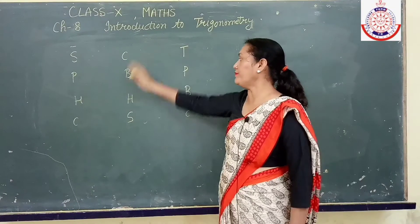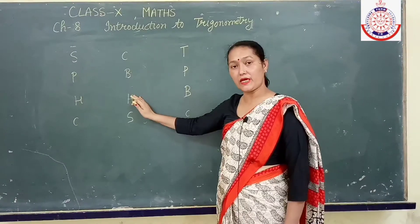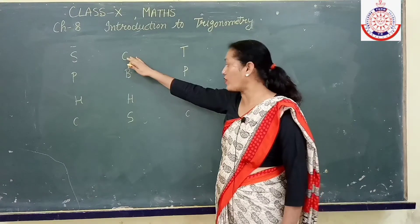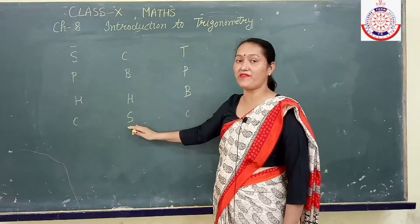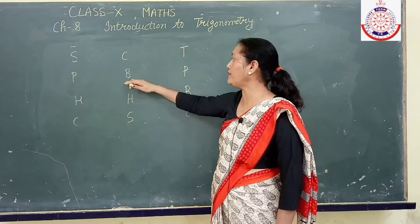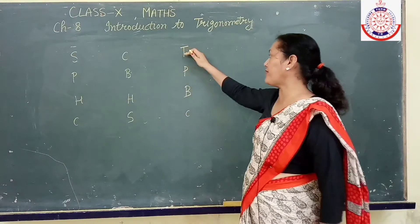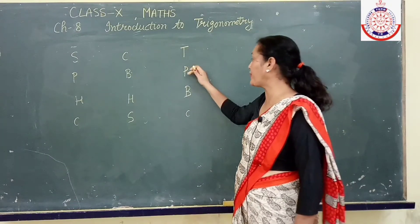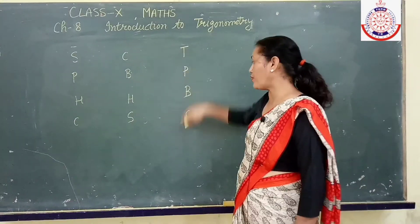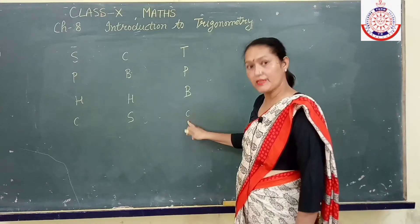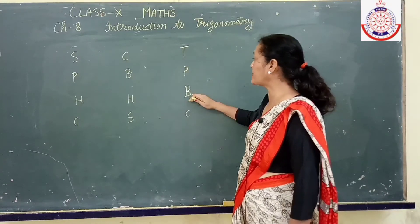Cos is having value base upon hypotenuse. And reciprocal of cos is secant. It will be having value hypotenuse upon base. Now the tangent is having value perpendicular over base. The reciprocal of tangent is cot tangent. That will be base upon perpendicular.